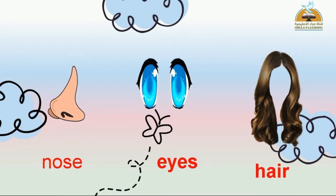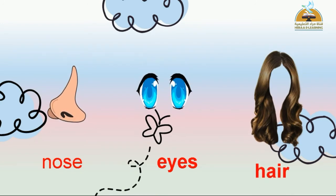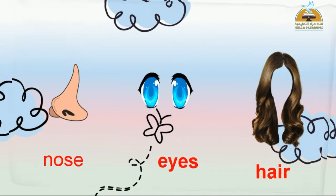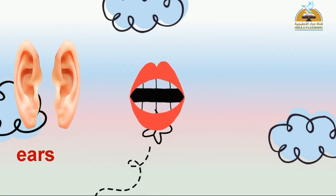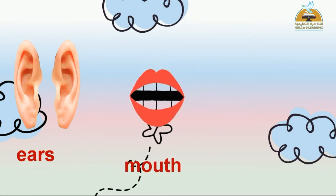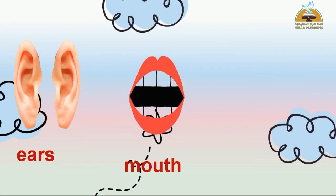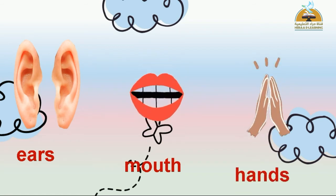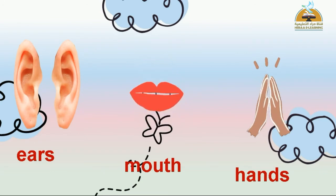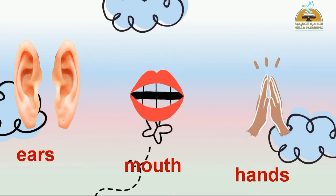Another word: Hair. Spell with me: H-E-I-R. Hair. Ears. Spell with me: E-A-R-S. Ears. Mouth. Spell with me: M-O-U-T-H. Mouth. Hands. Spell with me: H-A-N-D-S. Hands.